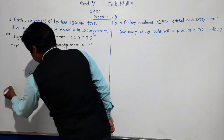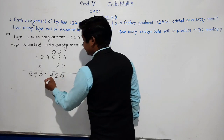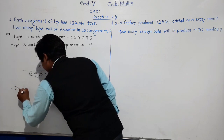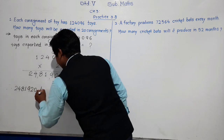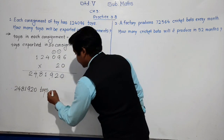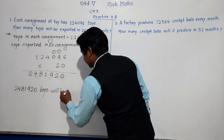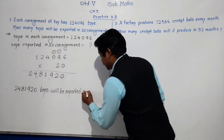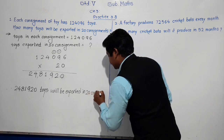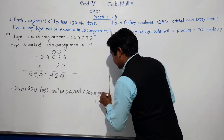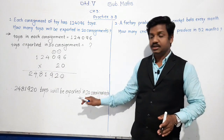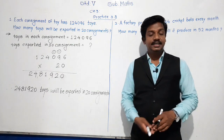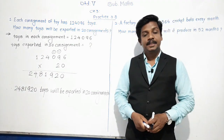So the answer is 24,081,920. That means 24,081,920 toys will be exported in 20 consignments.